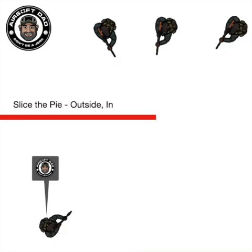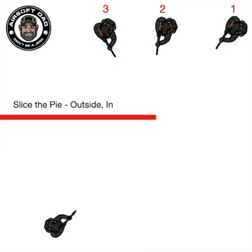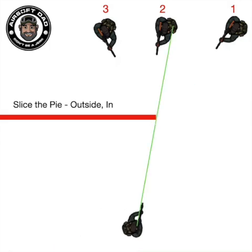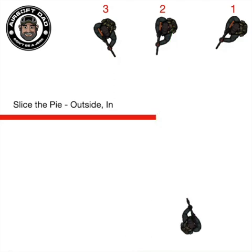This style of attack is called slicing the pie. In a defensive role, we always slice the pie outside in — IDPA shooters and defensive shooters know this fact. I labeled each opposing player 1 through 3, in the order in which I will engage each player. First, I set my angle on player 1, then I reset my angle on player 2, and then I reset again and engage player 3.